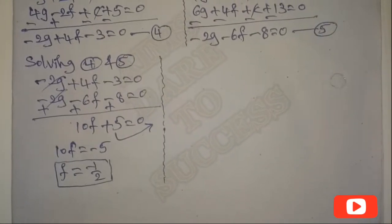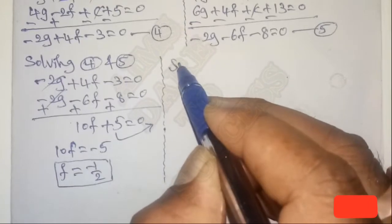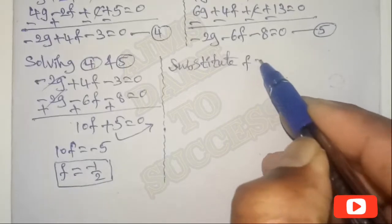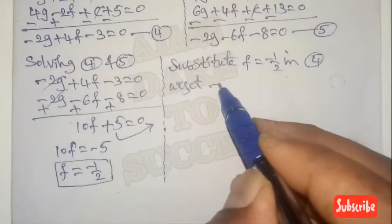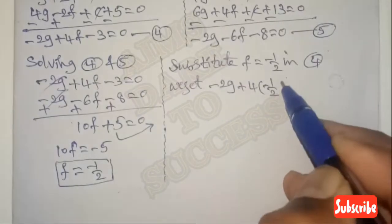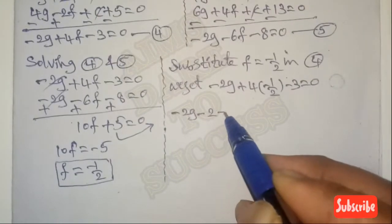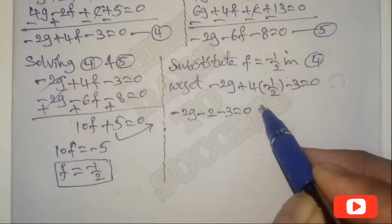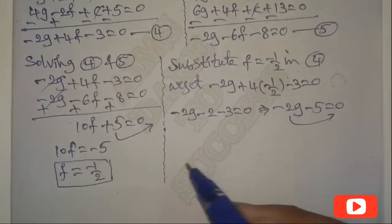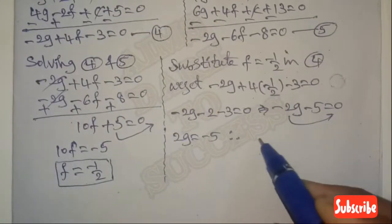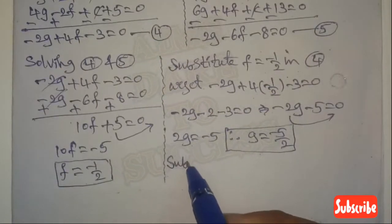Now substitute F = -1/2 into Equation 4, which has smaller numbers. Equation 4: -2G + 4(-1/2) - 3 = 0, giving -2G - 2 - 3 = 0, so -2G - 5 = 0. Therefore 2G = -5, and G = -5/2.